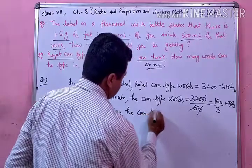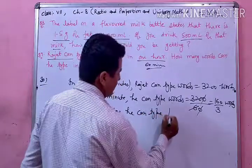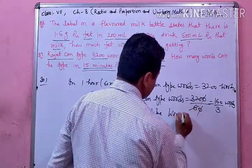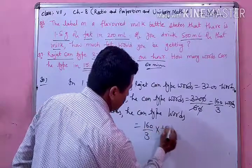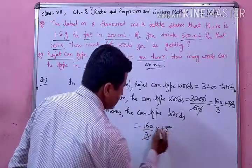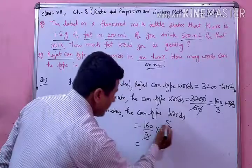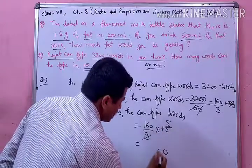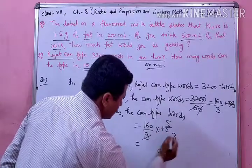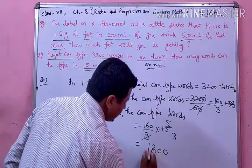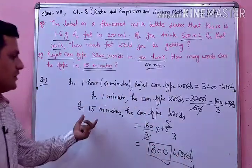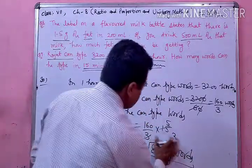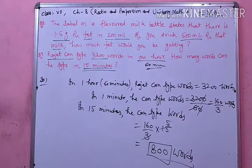In 15 minutes he can type — 160 upon 3 की multiply 15 से करेंगे। 3 से 15 को cut करेंगे तो 5 रहेगा, 160 × 5 = 800 words. तो वो 15 minutes के अंदर 800 words type कर सकता है। आप देखिए question number 10.